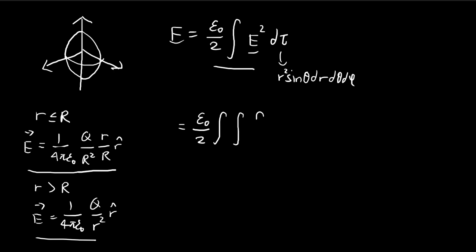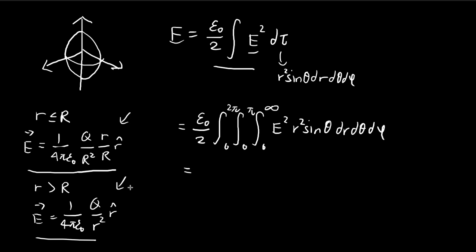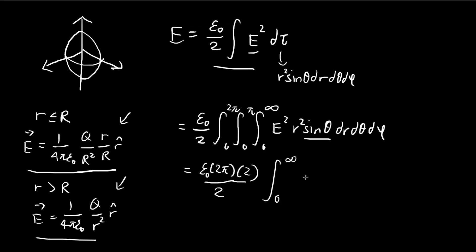Using this, we can evaluate the integral. Since we're integrating over 3D space we have a triple integral with the volume element. The bounds are: dr from zero to infinity, theta from zero to pi, and phi from zero to two pi. The electric field has no phi terms, so integrating over phi gives us two pi. There are no theta terms inside either, so integrating sine theta from zero to pi gives two. We're left with r squared times E squared dr.